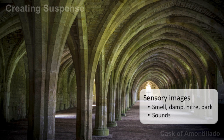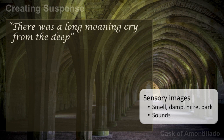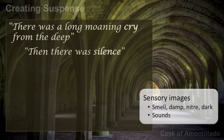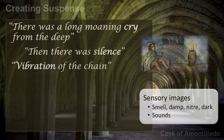He also uses many sensory images that make the story creepy and uncomfortable. He describes the catacombs in detail — the smell, the damp, the nitre around the wall, and the darkness. At the end of the story, at the climax, when he's building the wall and we realize we're moving towards a terrible ending, he uses sounds to enhance that creepy feeling. After Fortunato is shut in, there was a long moaning cry from the deep, and then there was silence. A little later, the vibration of the chain was the only sound. In fact, Montresor sits down to enjoy this sound and to enjoy the moment.